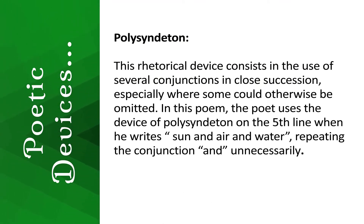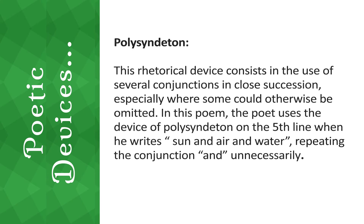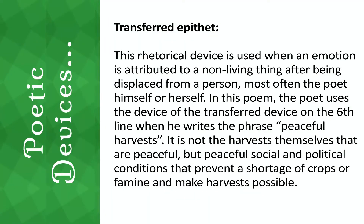The next device is polysyndeton, which consists in the use of several conjunctions in close succession, especially where some could otherwise be omitted. In this poem, the poet uses polysyndeton on the fifth line, where he writes 'sun and air and water,' repeating the conjunction 'and' unnecessarily.